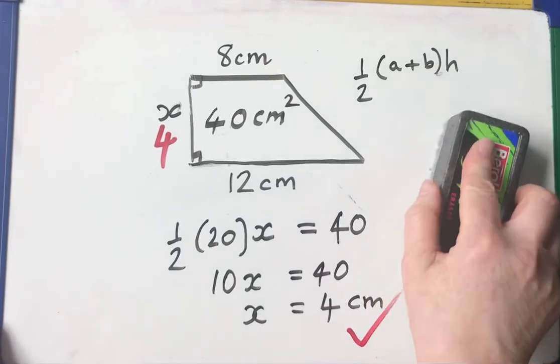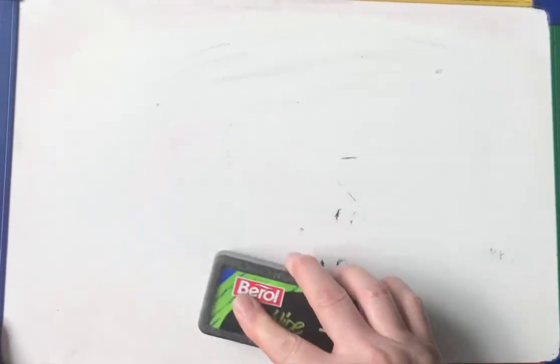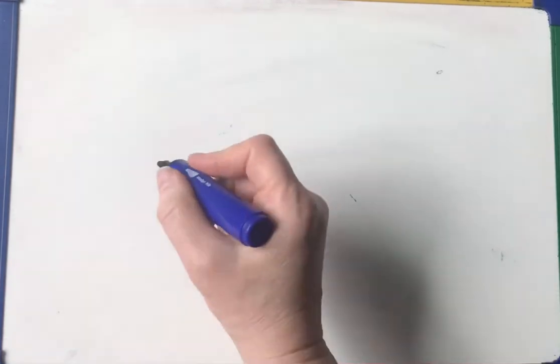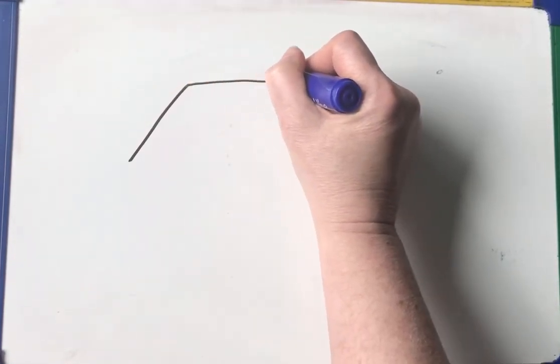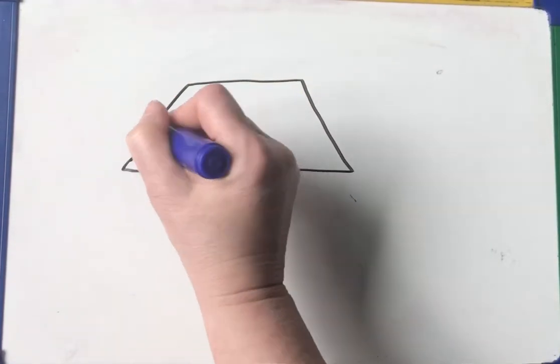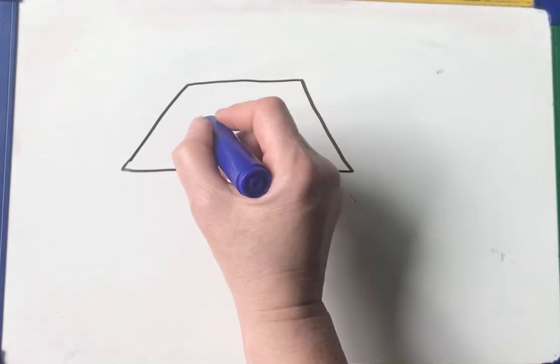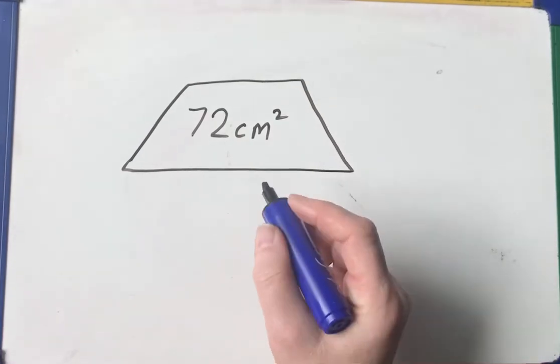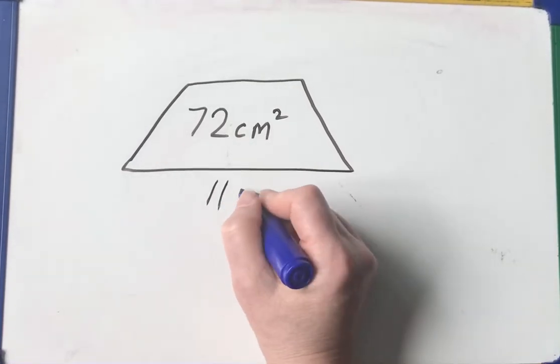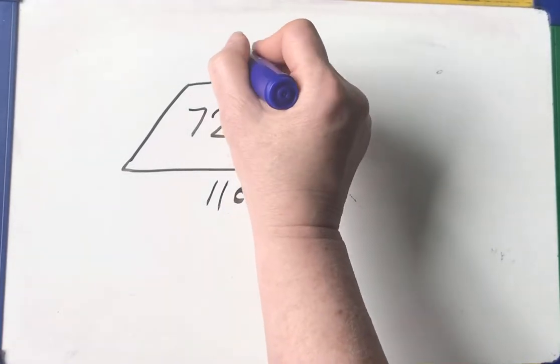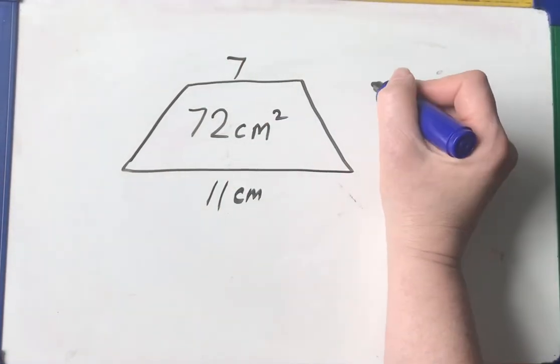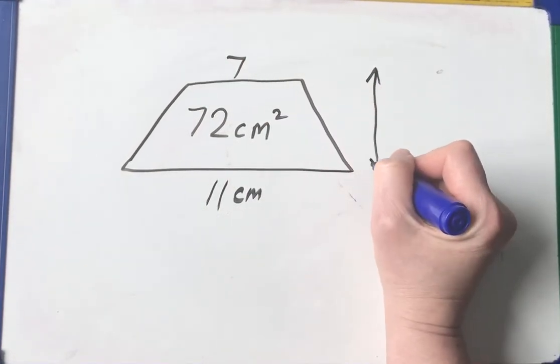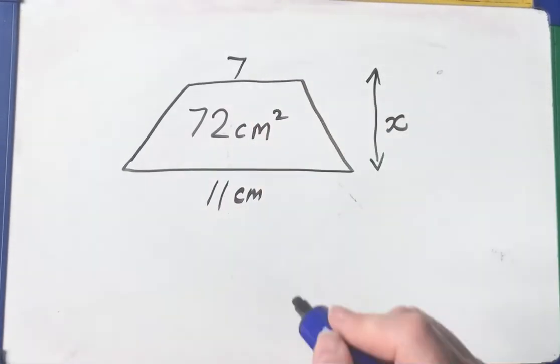I'll do another example. Let's say I have an isosceles trapezium and that might look something like this. Here's the trapezium. Very badly drawn, but you get the idea. Now, if the area is 72 centimeters squared and we're told that that parallel side is 11 and that one is 7,